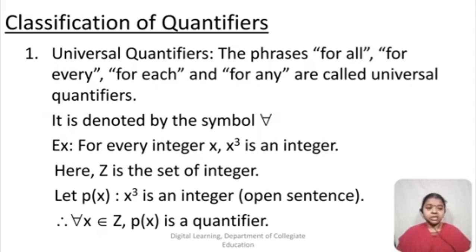Let's see the classification of quantifiers. There are two types: first, universal quantifiers; second, existential quantifiers. The phrases for all, for every, for each, and for any are called universal quantifiers. When we say universal, it refers to the entire set — everything, which is all. It is denoted by the symbol for all (∀).